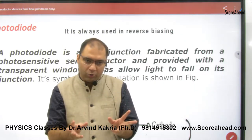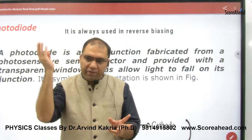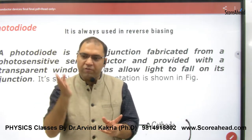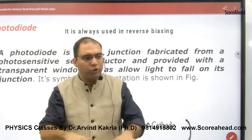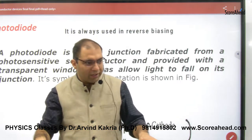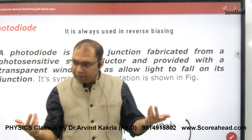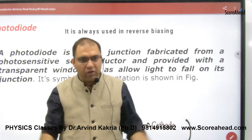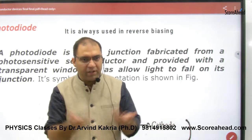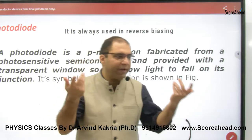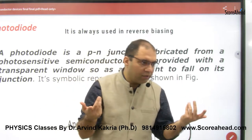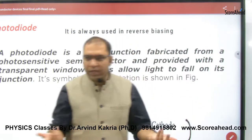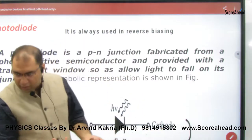In a photodiode, you have a diode junction. When a photon strikes the junction, bonds break and electron-hole pairs are released. These electron-hole pairs move across the junction under forward or reverse biasing, and the current increases. This is basically how the photodiode works — photocurrent is generated.